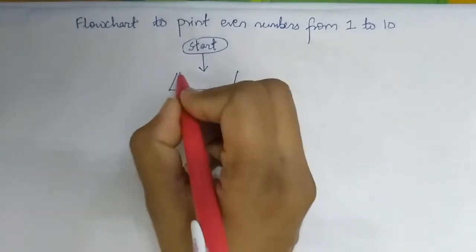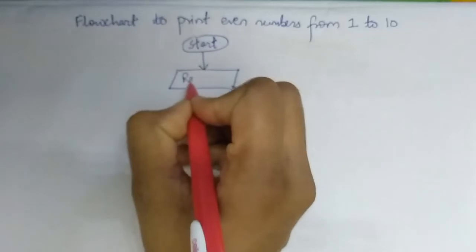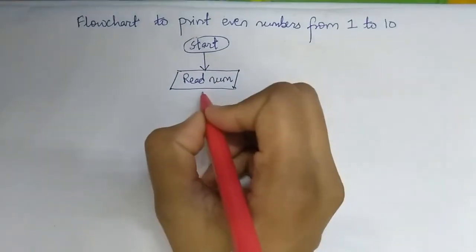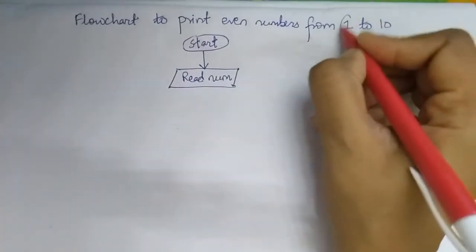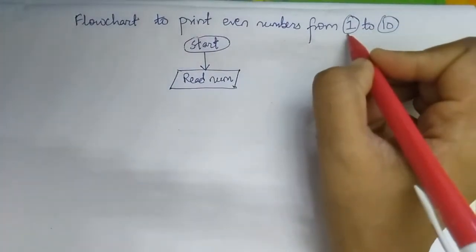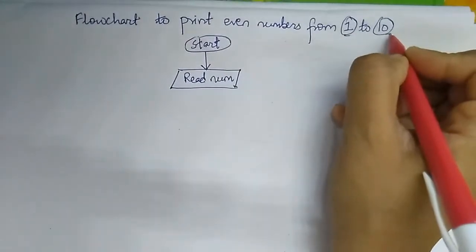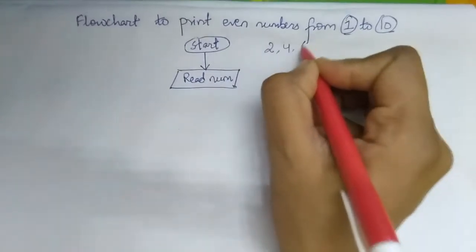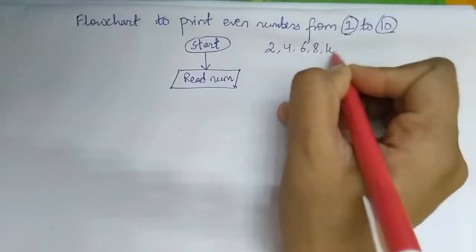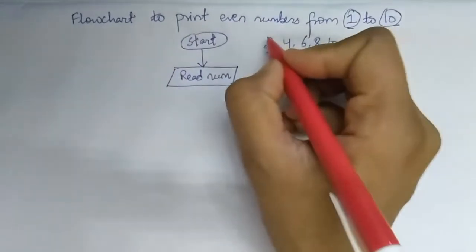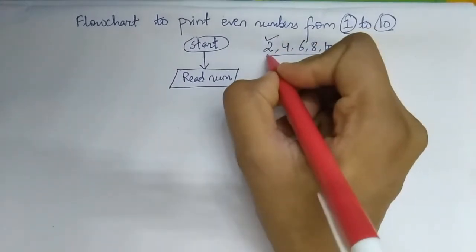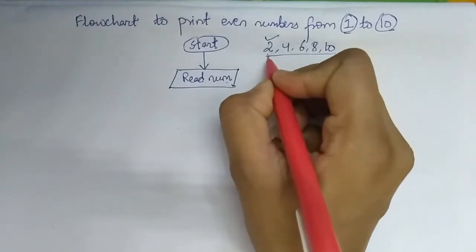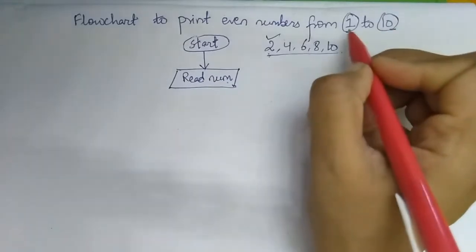After that we will read a variable called num. First, look at the question — from 1 to 10, the even numbers are 2, 4, 6, 8, and 10. So the first value is 2, and we have to set the value of num equal to 2.